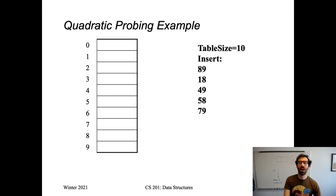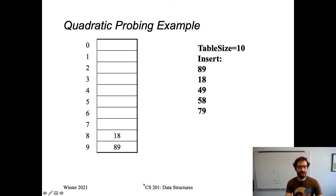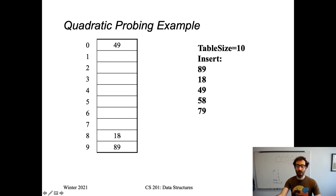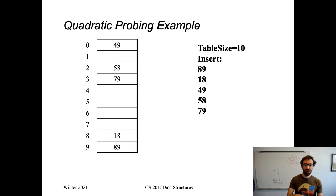In a quadratic probing example with table size 10: 89 mod 10 goes to 9, 18 mod 10 goes to 8, 49 mod 10 is 9 which is full, so we search one squared spaces away — mod table size wraps us to insert 49 at index 0. 58 would go at 8, that's full, one squared away is full, so we search two squared (4) spaces forward and insert 58 at index 2. 79 similarly ends up at index 3. This spaces elements out more and avoids primary clusters. However, with table size 7, a different vulnerability arises.